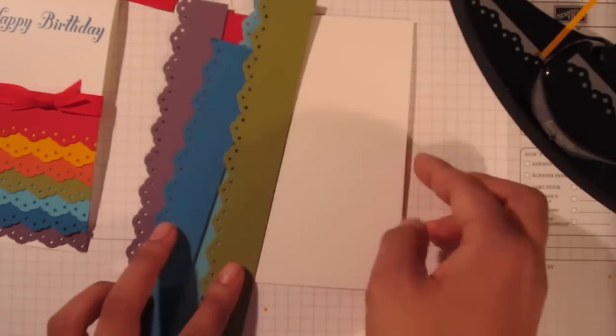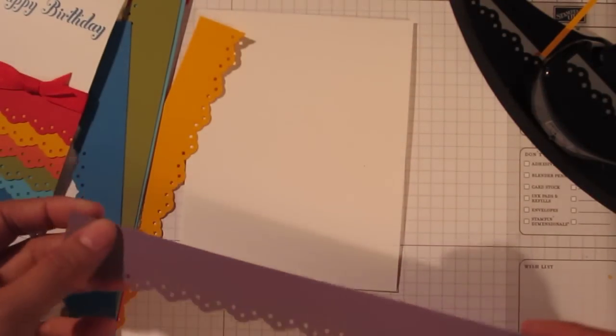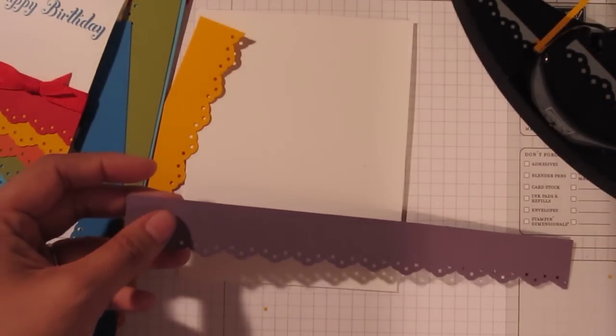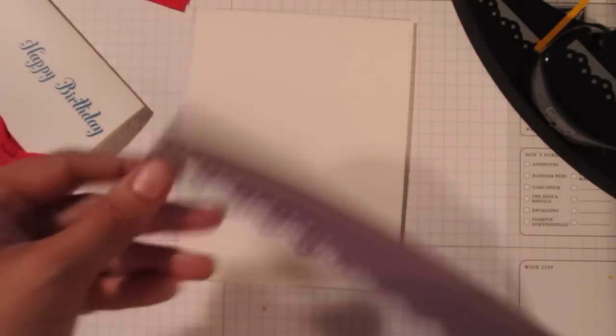Now I'm going to start from the bottom up. So I'm going to start with what we're calling violet. And I'll put all the cardstock names and the color names in the box below so you can check it out for yourself.